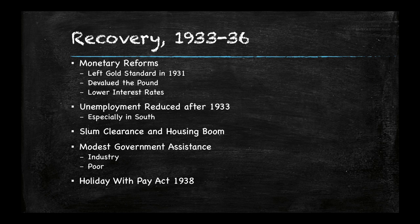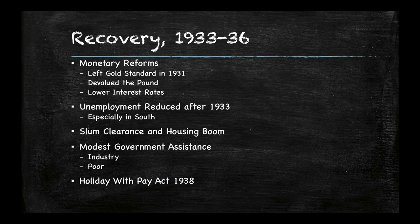During 1933 to 1936, the nation was on its way to recovery. There were some reforms: they left the gold standard, which devalued the pound but also put more pounds in circulation. They lowered interest rates so more people would be spending money rather than hoarding it. Unemployment started to go down, especially in the south. Slum clearance and a housing boom replaced run-down poor houses, like those seen in Wigan Pier, with much better government houses. There was some government assistance for poor people and especially for industry, and the Holiday with Pay Act of 1938 also encouraged people to spend more money.